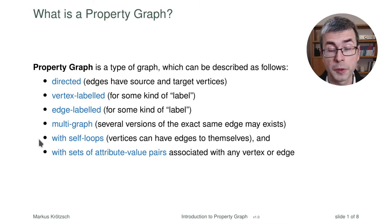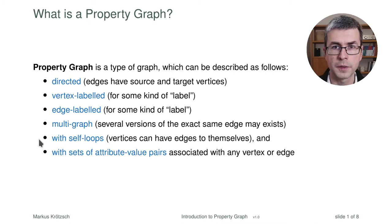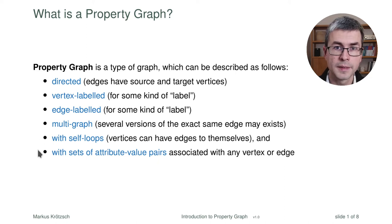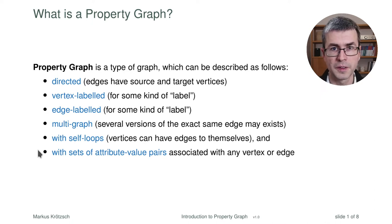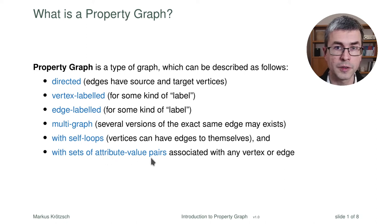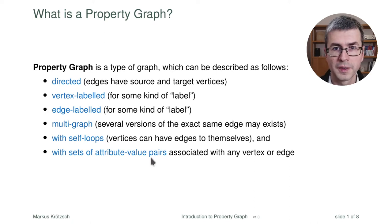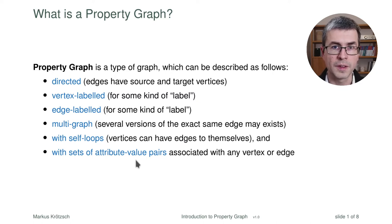It does support self-loops, so it's possible to have the same source and target — no surprise there; it would be strange to exclude that. And it can have — and this is the big difference to many other graph models — sets of attribute-value pairs associated with every edge or vertex. This is, in some sense, the defining feature of property graph more than any of the others.